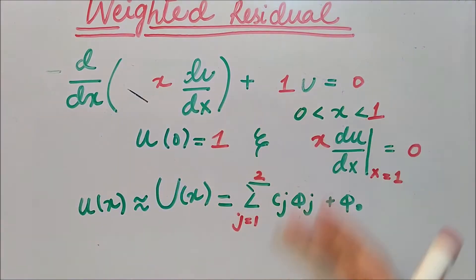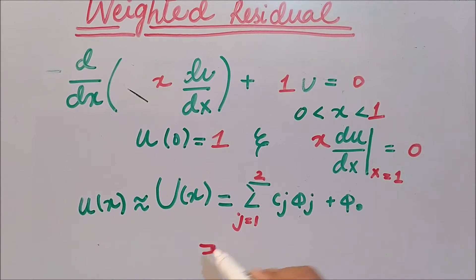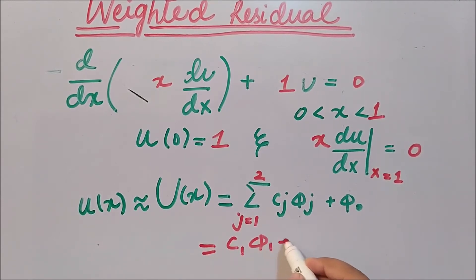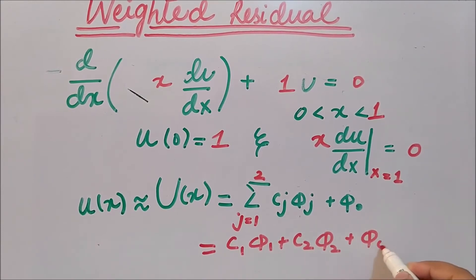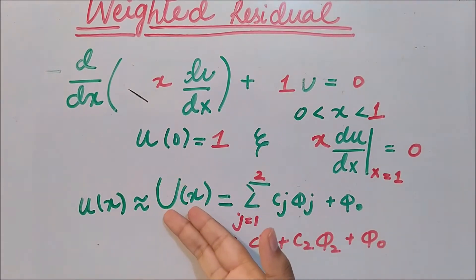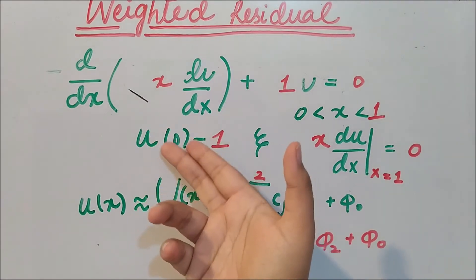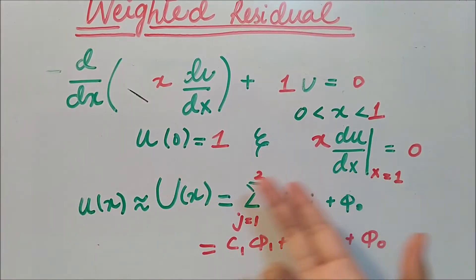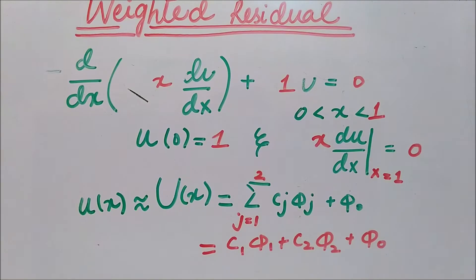We have a specified differential equation and we have to expand the approximate function. We can write it as c1·φ1 + c2·φ2 + φ0. We have to specify φ1, φ2, and φ0 such that this approximate function satisfies the two boundary conditions.